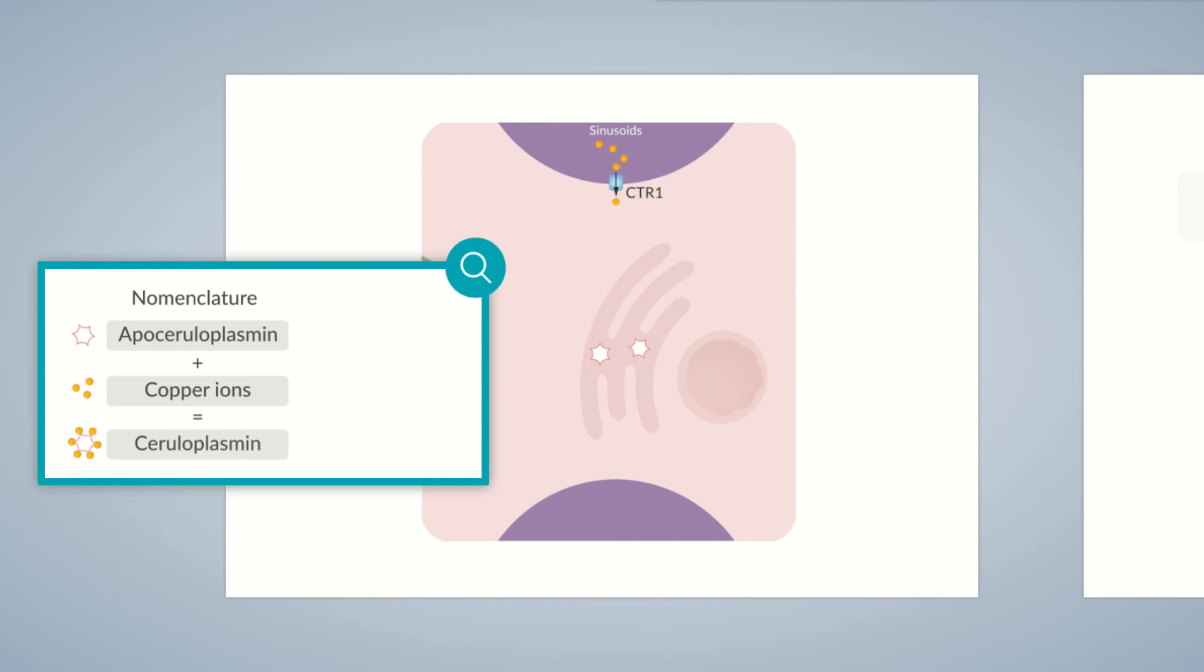By the way, this applies to all enzymes that contain both a protein and a nonprotein part. The protein part of the enzyme is called an apoenzyme, whereas the nonprotein part is termed cofactor. Once the cofactor binds to the apoenzyme, then the enzyme is considered complete and functional.